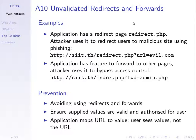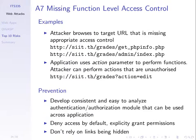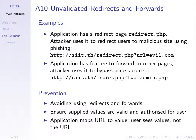The last one we saw in the demo was a redirect. A simple web page redirects to some external site; the attacker takes advantage of that redirect page to redirect to other websites. Maybe the user thinks they're going to a trusted website like SIIT, but in fact they're redirected to some evil website. There's some social engineering here — the user thinks the URL is to a trusted website, but the redirect sends them to an untrusted one. Be careful when you use redirects in your web application and check that the redirect is a valid one.